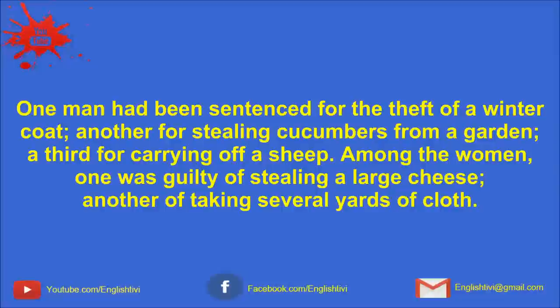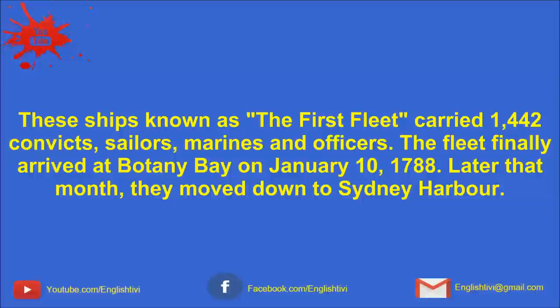Among the women, one was guilty of stealing a large cheese, another of taking several yards of cloth. These ships, known as the First Fleet, carried 1,442 convicts, sailors, marines, and officers. The fleet finally arrived at Botany Bay on January 10, 1788. Later that month, they moved down to Sydney Harbor.